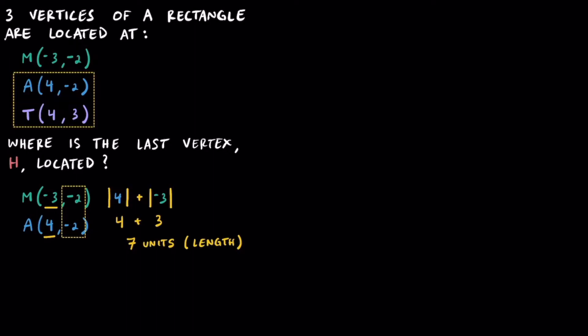Looking at points A and T are also interesting because notice how they have matching x-coordinates of positive 4. If that's the case, we can find the distance between their y-coordinates of negative 2 and positive 3, and since they're in different quadrants, we'll add their absolute values again. We find out that the width of this rectangle is going to be 5 units long.